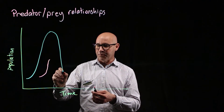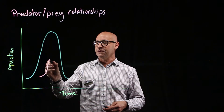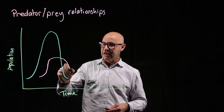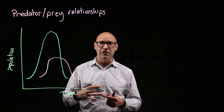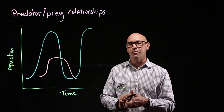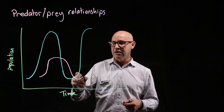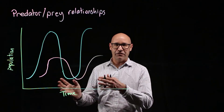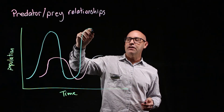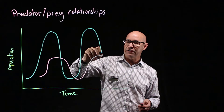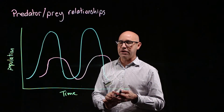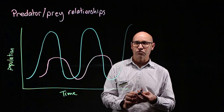So the predator population then comes along and starts to increase to feed on those prey. If the prey population decreases, that means the same thing is going to happen with the predator population — it's also going to decrease. And if the predator population decreases, that's the ideal time for the prey population to increase again. If the prey population increases, that's going to be the ideal time for more predators to reproduce and increase, leading to another decrease in prey population. And it's going to continue to cycle like that.